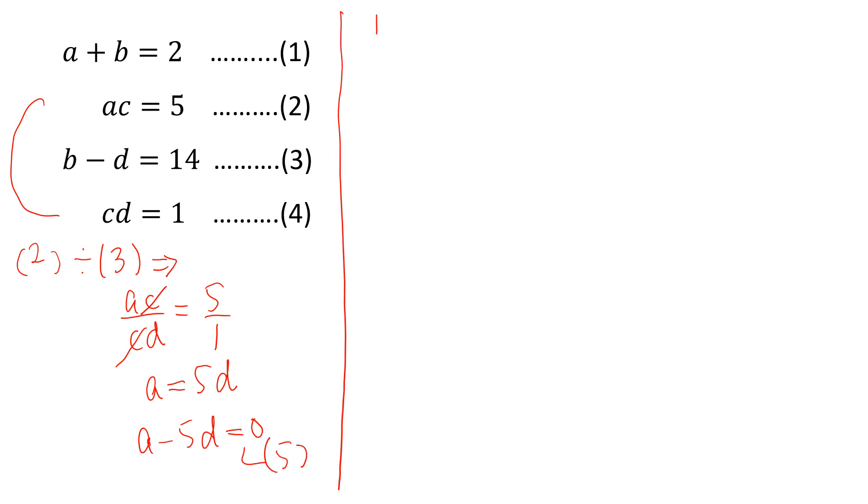Now equation 1 minus equation 3, and we can write A plus B is equal to 2, B minus D is equal to 14. This is plus, this will be minus, this is minus, this will be plus, and this is plus, this will be minus. These two cancelled and A plus D is equal to minus 12. Let this be equation 6.